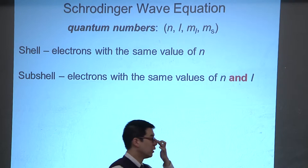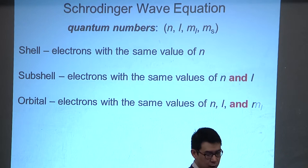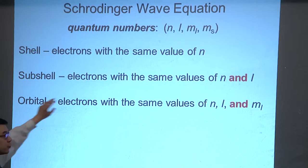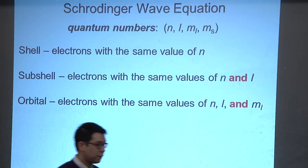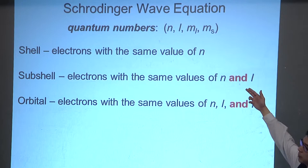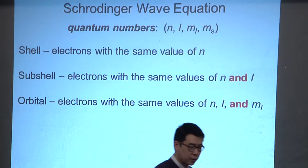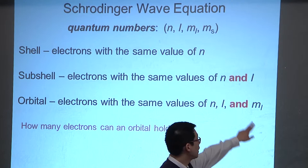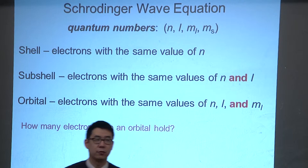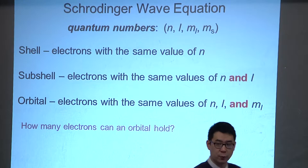We associate particular letters with l: s, p, d, f. Once you have n and l, you look at m sub l. Electrons with the same value of n, l, and m sub l are in the same orbital. The shell is like the section in the stadium, the subshell is the row, and the orbital is the seat. In the atom, each m sub l can be associated with two different m sub s values: plus one-half or minus one-half.